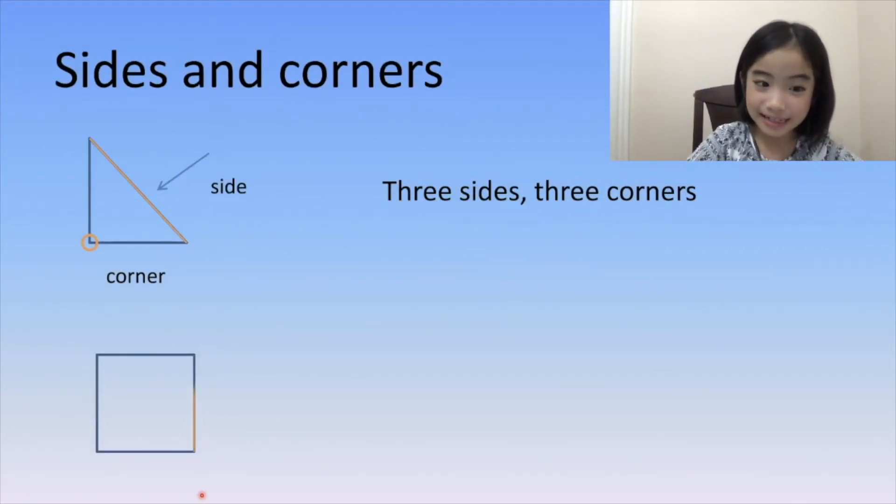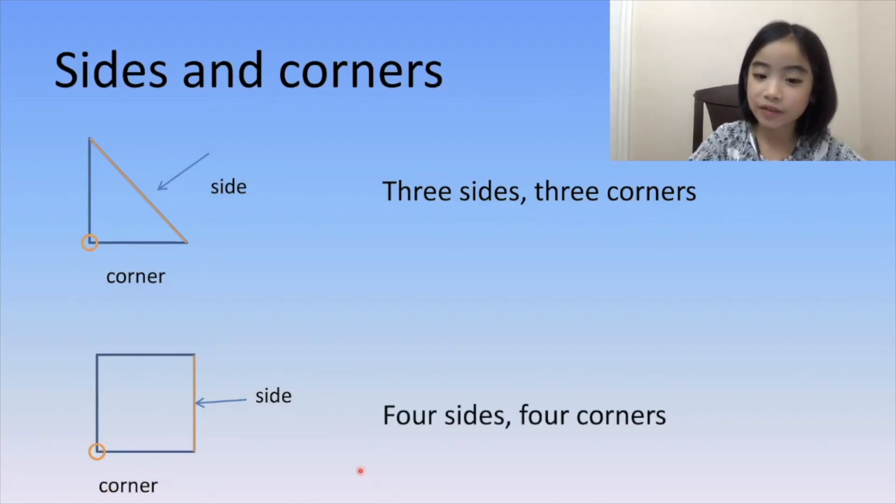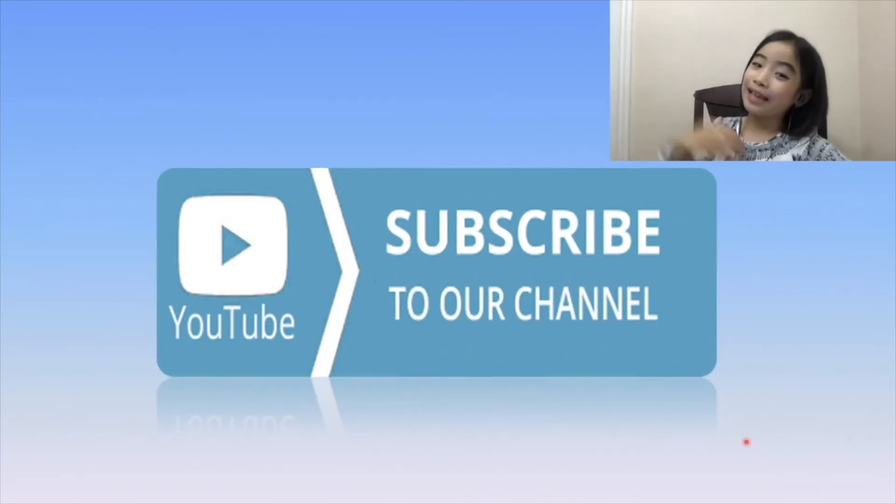Now, again, we have a side and corners. A square has four sides and four corners. If you like me, please subscribe to my channel. Thanks for your support!